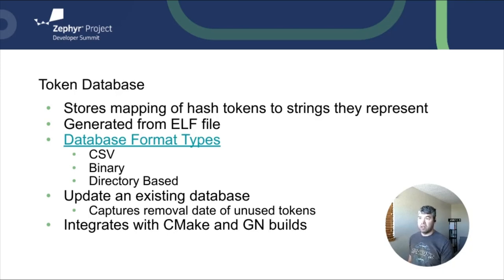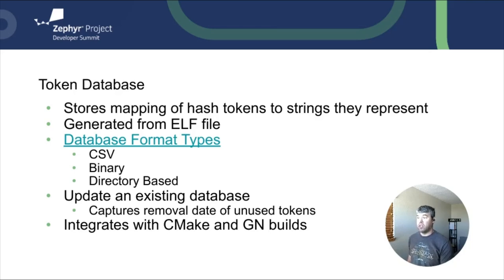The token database command will randomly generate unique file names for the CSVs to prevent merge conflicts. Pigweed gives you the capability to update existing token databases. You can merge multiple databases into one. You can append to existing databases to have a historical database. When a string is removed from a build, the database will keep track of the removal date for later purging if needed. Pigweed offers APIs for CMake and GN builds to help you integrate it into your build process to create token database artifacts.